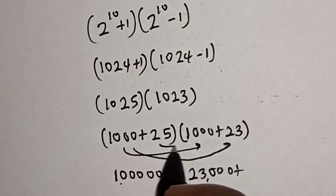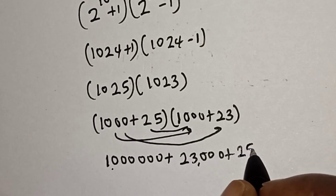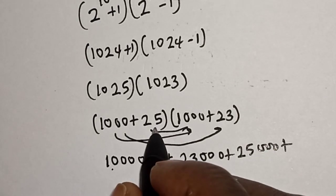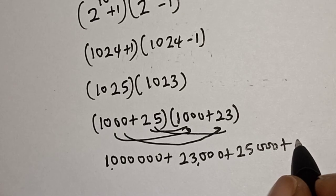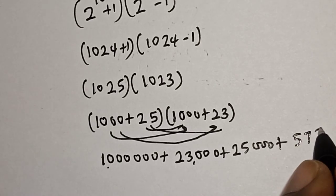plus this to this, that is 25,000, plus then this goes to this, that is 575.